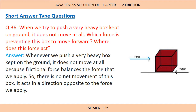Question number 36: When we try to push a heavy box kept on ground, it does not move at all. Which force is preventing this box from moving forward, and where does this force act? Friction is the force doing this, and it always acts in the opposite direction. Whenever we push a heavy box, it does not move because frictional force balances the applied force, so there is no net movement. Friction always acts in the direction opposite to the force we apply — this you have to always remember.